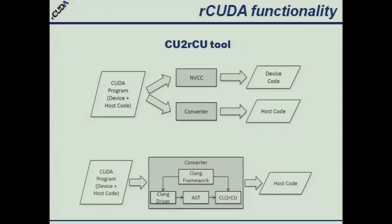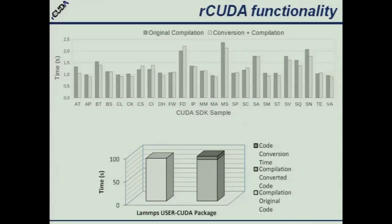This parser takes the CUDA program, splits the code, and the device code to be executed on the GPU is compiled by the NVIDIA compiler while our converter produces the host code. Our converter is based on the Clang framework, which is one of the LLVM projects. Does this conversion take more time? No — comparing the time for general compilation with the NVIDIA compiler versus conversion and compilation with our tool shows basically the same time. For the LAMPS program, an expert took two weeks to manually convert from CUDA to RCUDA; our tool does it in less than two minutes.